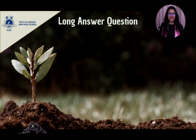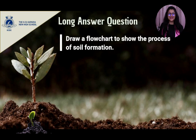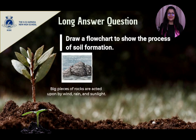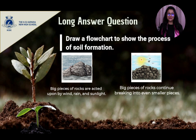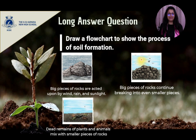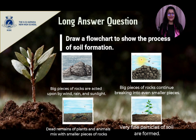Question 5: draw a flowchart to show the process of soil formation. Step 1: big pieces of rocks break down into smaller pieces of rocks by wind, rain and sunlight. Step 2: big pieces of rocks continue to break down into even smaller pieces of rocks. Step 3: dead remains of plants and animals mix with smaller pieces of rocks. Step 4: very fine particles of soil are formed. This is how soil is formed.